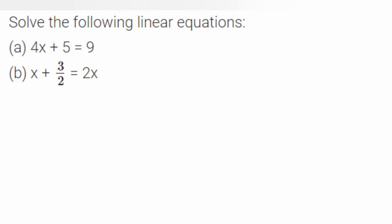Hello everyone, welcome to my channel. Here I am doing a question from a linear equation. The question is solve the following linear equations: 4x plus 5 is equal to 9, and the second one is x plus 3 upon 2 is equal to 2x. So you have to find the value of x in both equations. Let's start doing this.